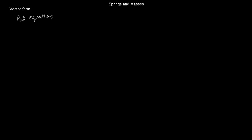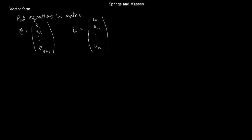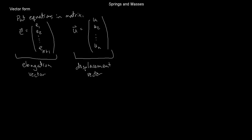All of that information involves a lot of equations, and they're all linear. So why don't we put it all in vector form? We can put everything in terms of matrices and vectors, which will make it more compact, and maybe we'll be able to see more about how linear algebra should apply. I'm going to put all my elongations in a vector — there are n plus one of them, so this is a vector with n plus one entries. And I'm going to put all my displacements in a vector, with only n entries.